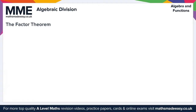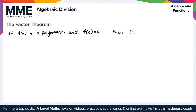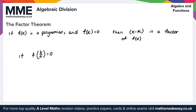The Factor Theorem is defined as follows: if f of x is a polynomial and f of k equals 0, then x minus k is a factor of f of x. We can also say if f of b over a is equal to 0, then ax minus b is a factor of f of x.